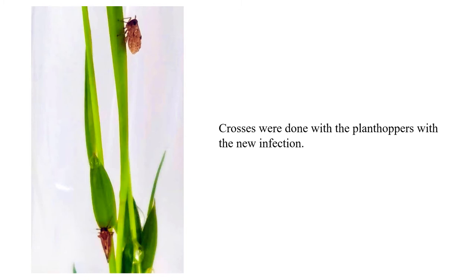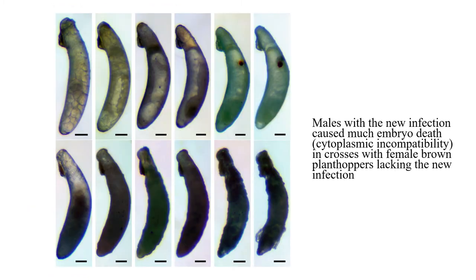Next we looked at the ability of this Wolbachia to affect the reproduction of the plant hoppers. This is something Wolbachia can commonly do — it can upset reproduction by causing something called cytoplasmic incompatibility. We crossed males and females with different Wolbachia statuses across those strains and found that if males with this new WSTRI strain were crossed to females without the strain or with a different strain, we got incompatibility. You can look at egg development: when you get embryo death, the eggs shrivel up, as indicated in the bottom there, as opposed to looking quite healthy.